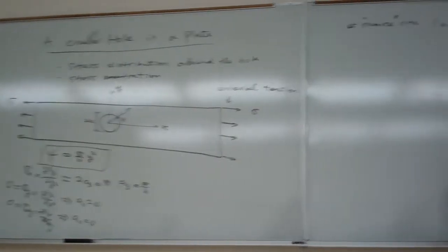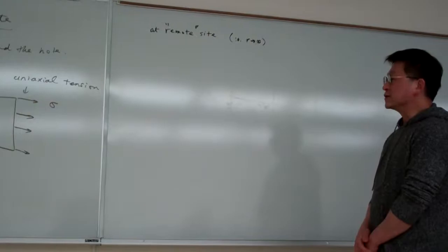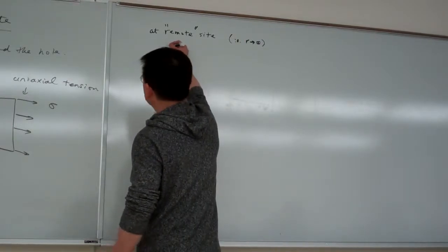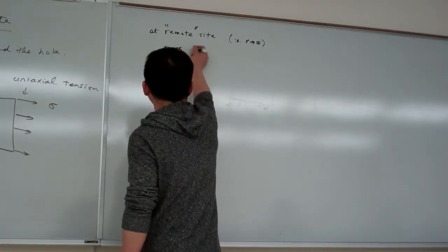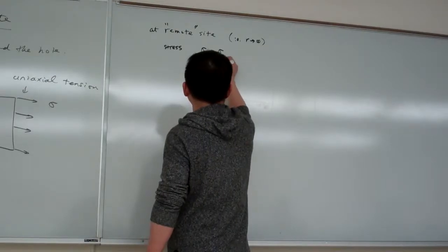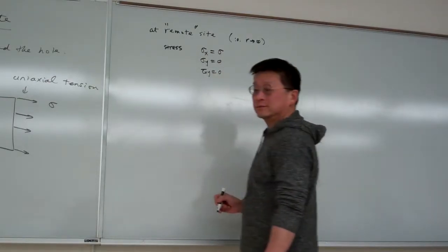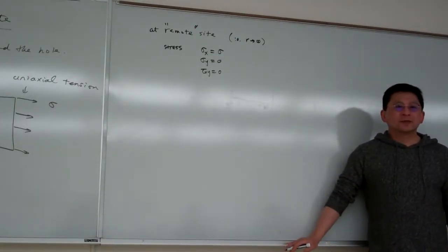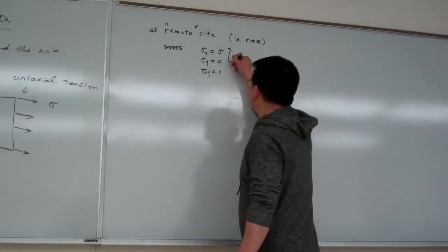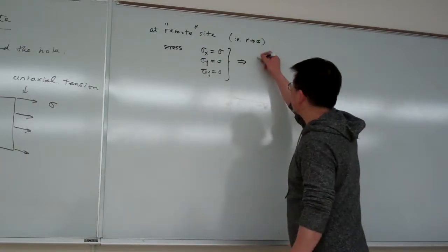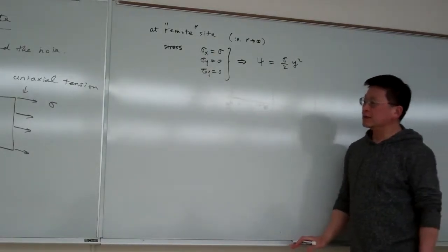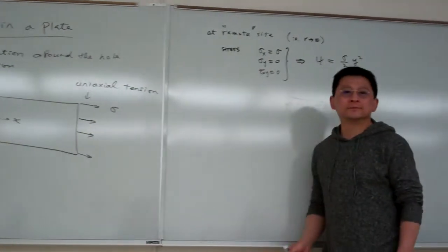So under that situation, then we might come up with something. For remote site, we say the stress still the same as we are given. So that means sigma x equal to sigma and sigma y equal to zero, tau xy equal to zero. That's a good approximation, and actually this is true. From here, we can deduce the corresponding stress function is equal to sigma over 2 y squared, based upon the preparation we have here.